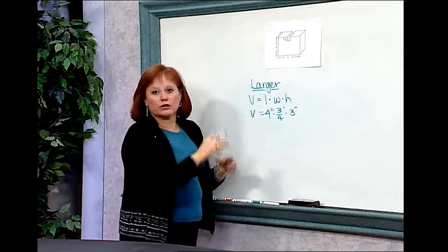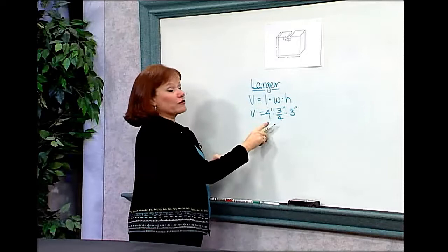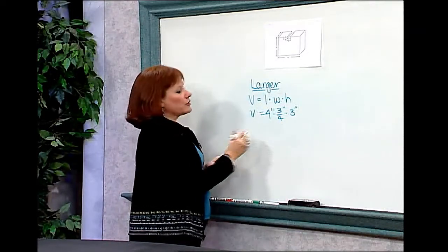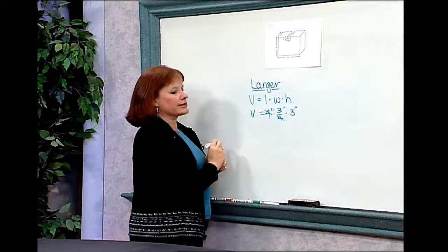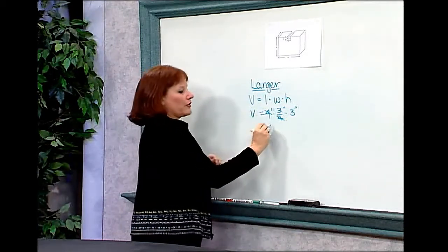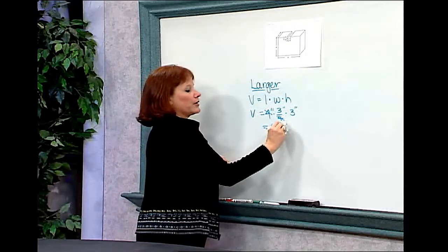So the volume of this particular large prism without the cut out would be 4 inches times 3/4 of an inch times 3 inches. I'll use what I know about fractions to do some cancelling to simplify my problem, and I find that the volume of the larger prism without the cut out would be 9 cubic inches.